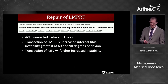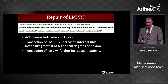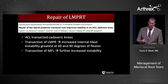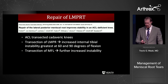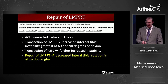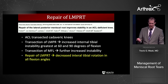What about the lateral meniscus root repair? In ACL-transected knees, transection of the lateral meniscus posterior root led to increased internal tibial instability, most specifically at 60 and 90 degrees. Transection of the meniscofemoral ligament further increased instability, producing a rotational instability component as well, and repair of that may reduce it — and this study suggested that it did.